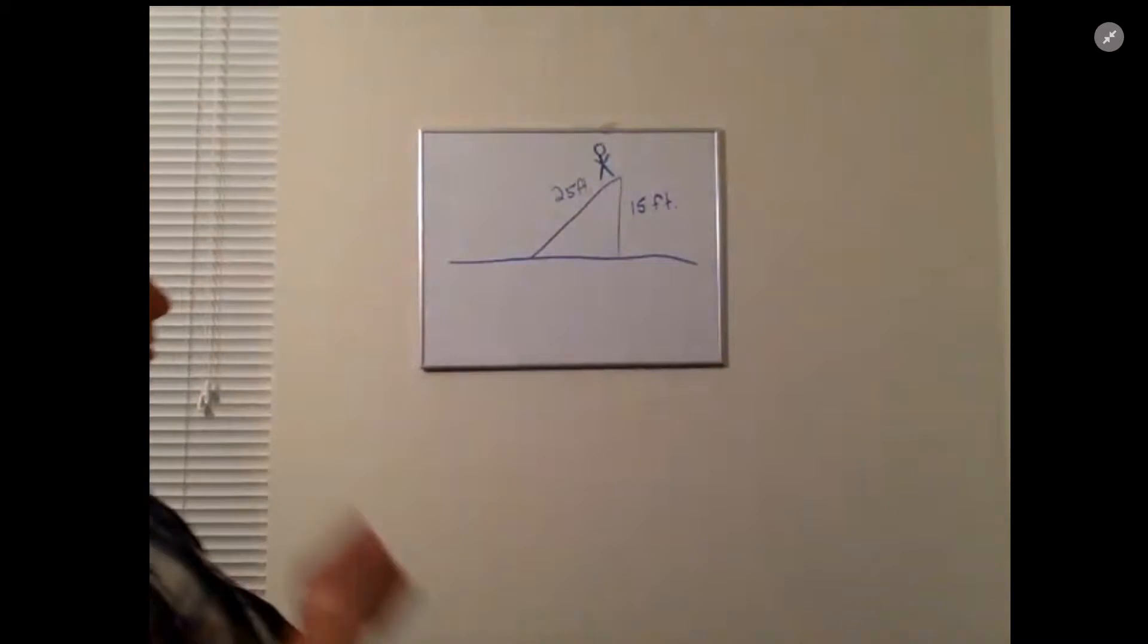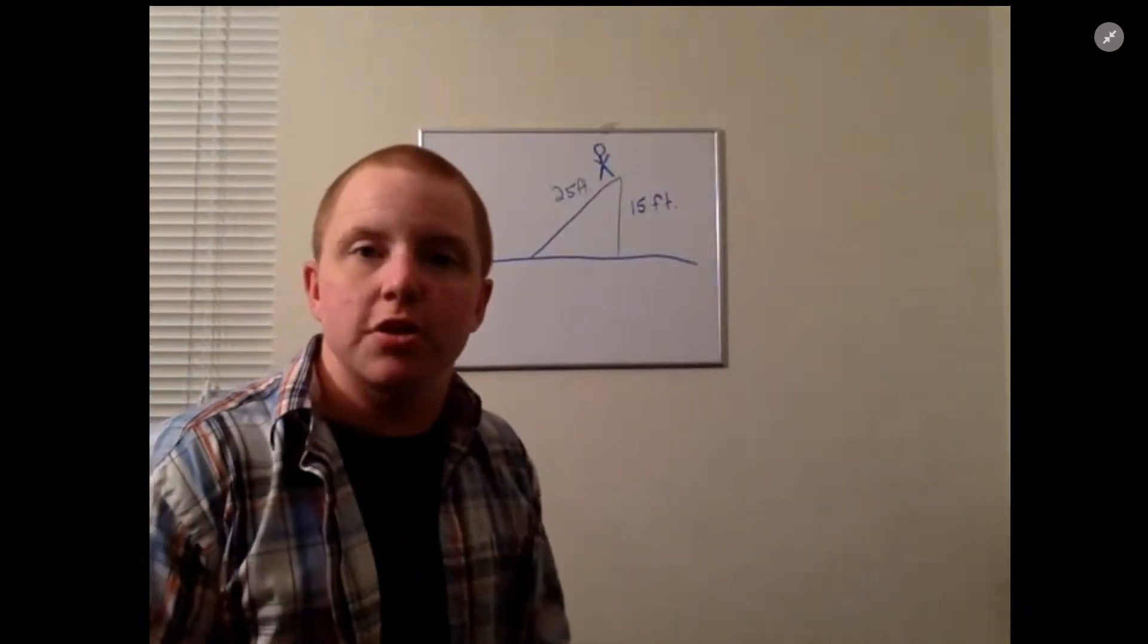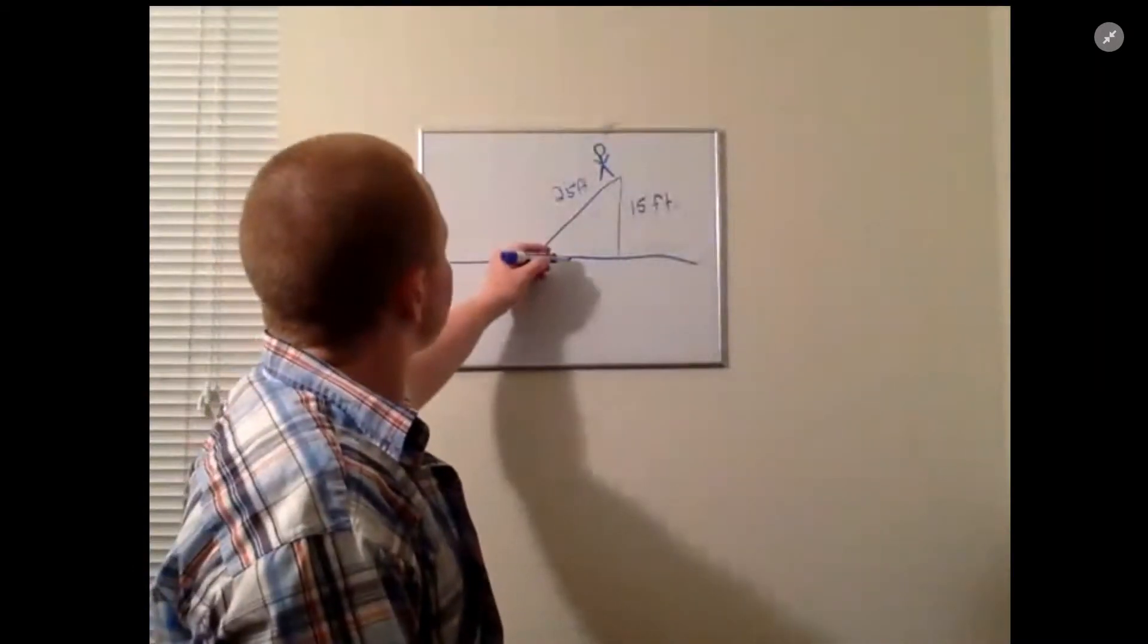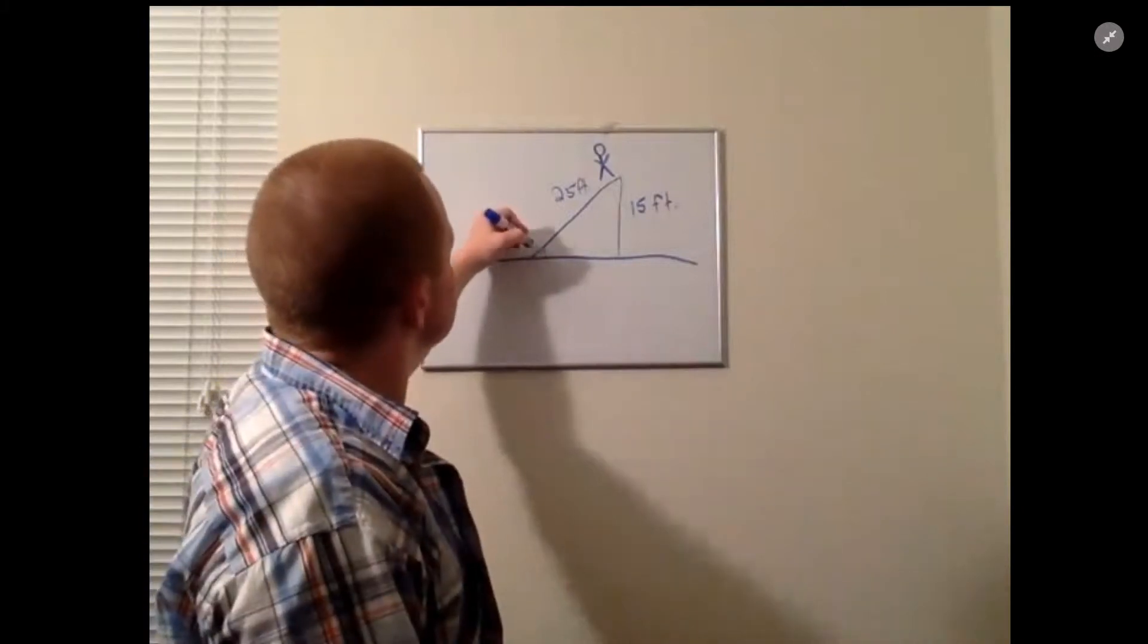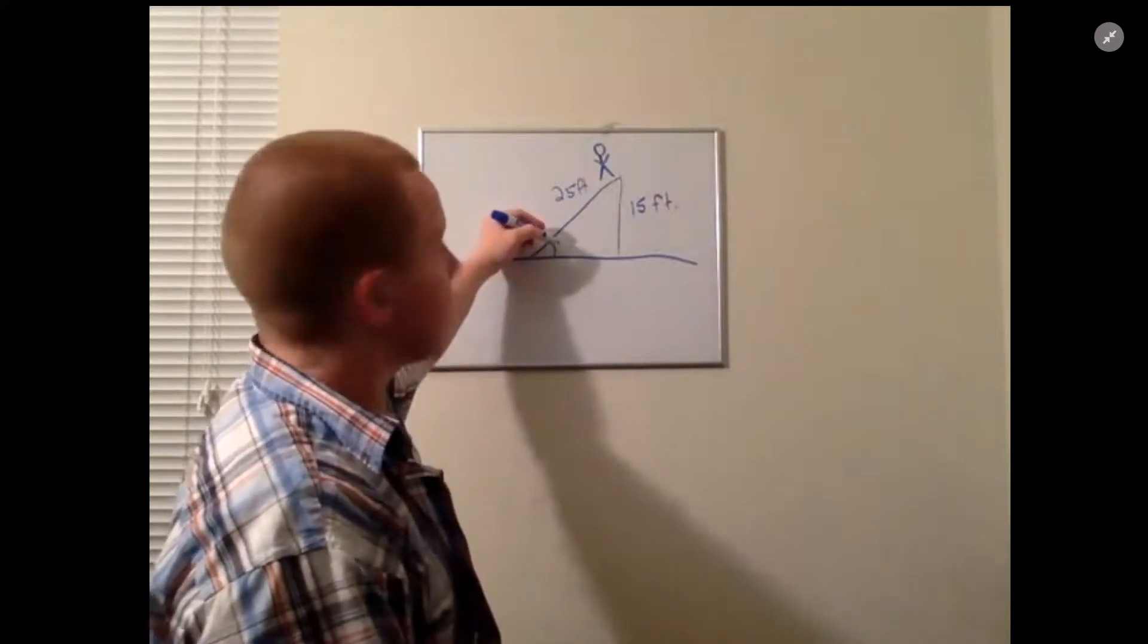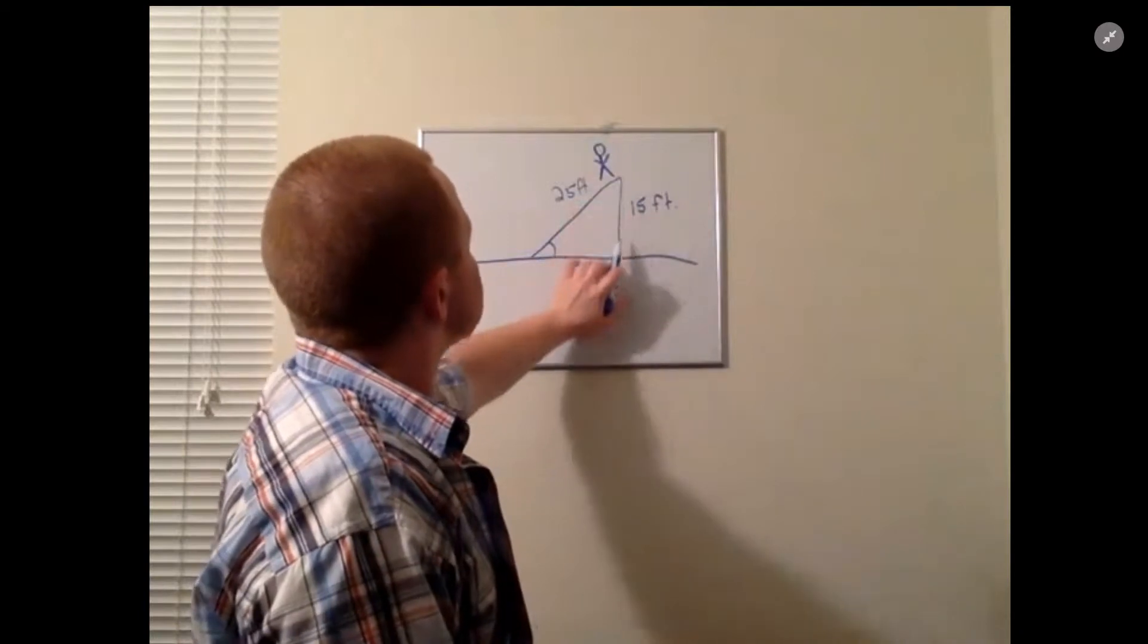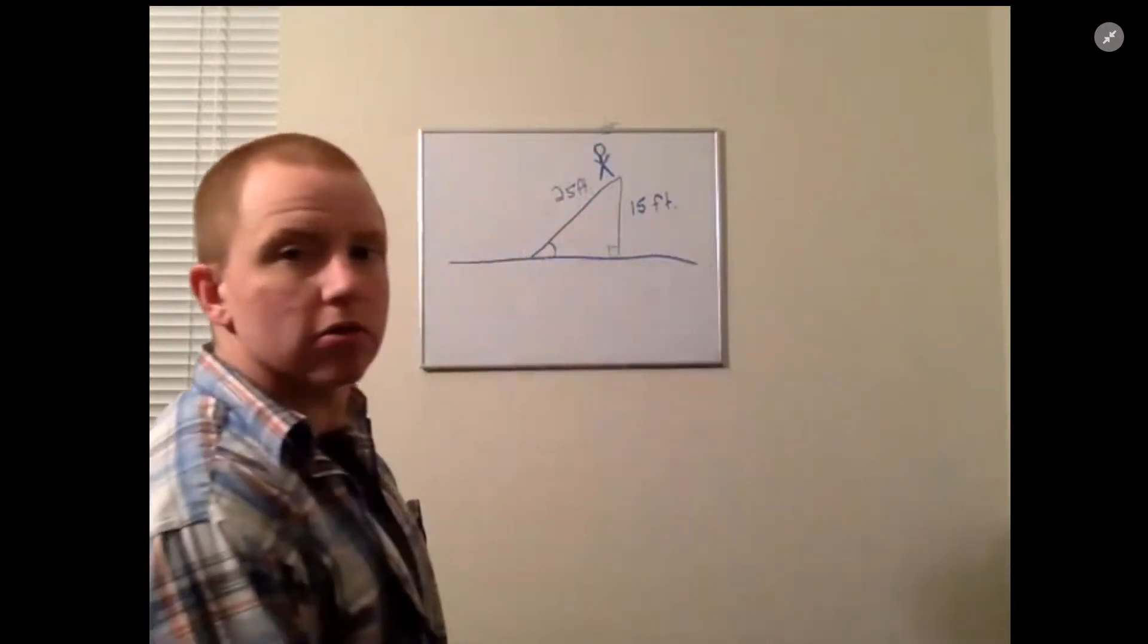We want to find the angle of inclination from the ground to the slide. From the ground to the slide means it has to touch both of those, so that would be this angle. If this height is straight from the ground and straight up, that's going to make a right angle, so we can use our SOHCAHTOA tricks with trigonometry.